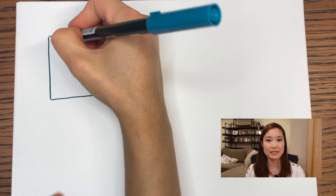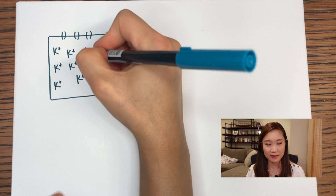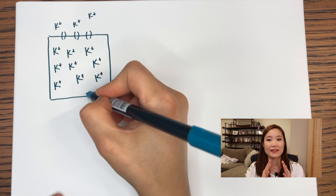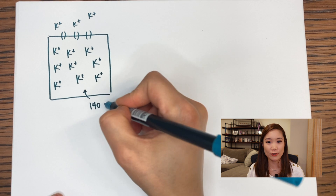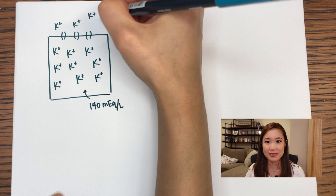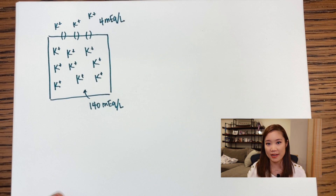One important thing to know about potassium is that it's primarily an intracellular ion, so there's a lot more potassium inside the cells than outside the cells. Inside the cells, a normal potassium concentration is about 140 milliequivalents per liter. Compare that to the concentration outside the cells in the extracellular fluid — for example, in the blood — which is about 4 milliequivalents per liter. So definitely a lot less.